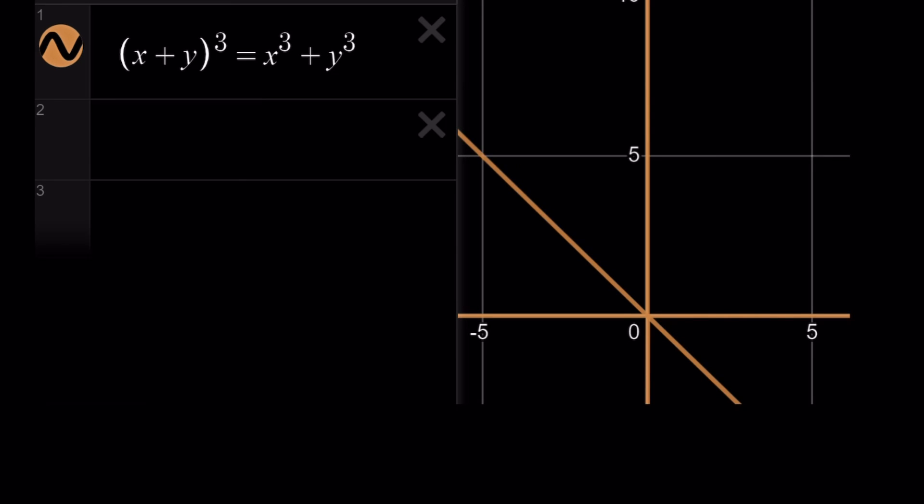I don't know how GeoGebra or any other tool does, but this is pretty much the same thing. We get y equals negative x. This is one of the solutions. x equals 0 or y equals 0 is another solution.